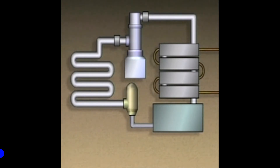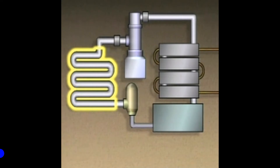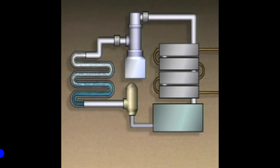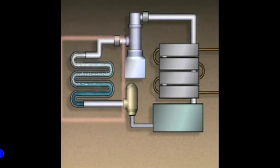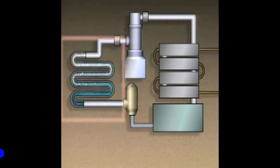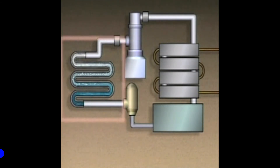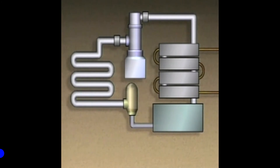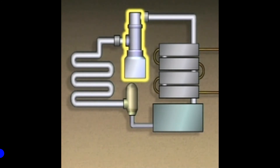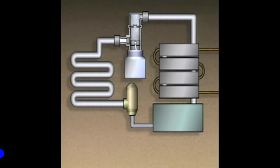In a vapor compression refrigeration cycle, the component in which the refrigerant absorbs heat is an evaporator. In the evaporator, the refrigerant evaporates or boils into a vapor, and at the same time the area around the evaporator is cooled. The evaporator draws heat from its immediate surroundings; this heat is transferred to the refrigerant because the temperature of the refrigerant is lower than the temperature of the evaporator's surroundings. To move the refrigerant through the cycle, a compressor is used to add energy to the refrigerant. The compressor receives the refrigerant vapor from the evaporator and compresses it, increasing the vapor's pressure and temperature.